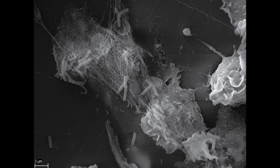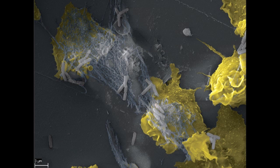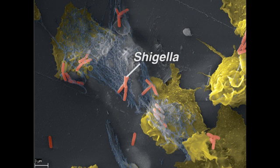In this scanning electron micrograph, neutrophils are attached to a flat surface, and we can see the abundant folds of their cell membranes. We can also see that the neutrophils are infected with the gram-negative bacteria Shigella, which appear as rod-shaped objects and are colored red.